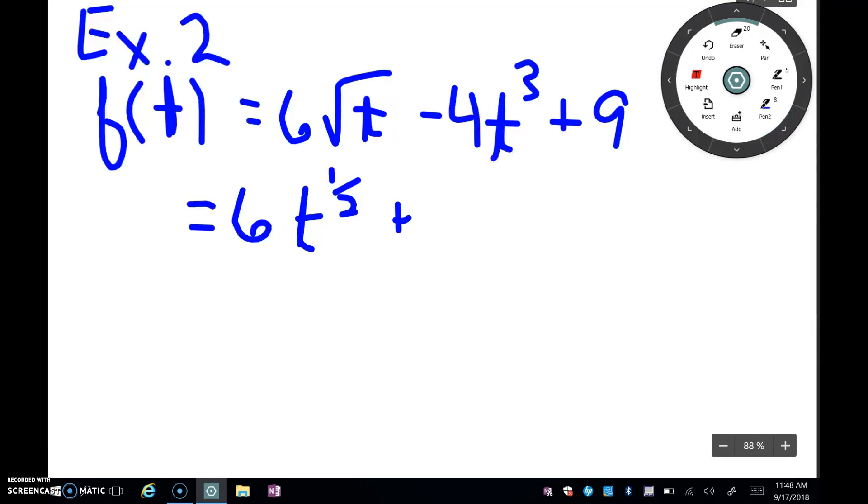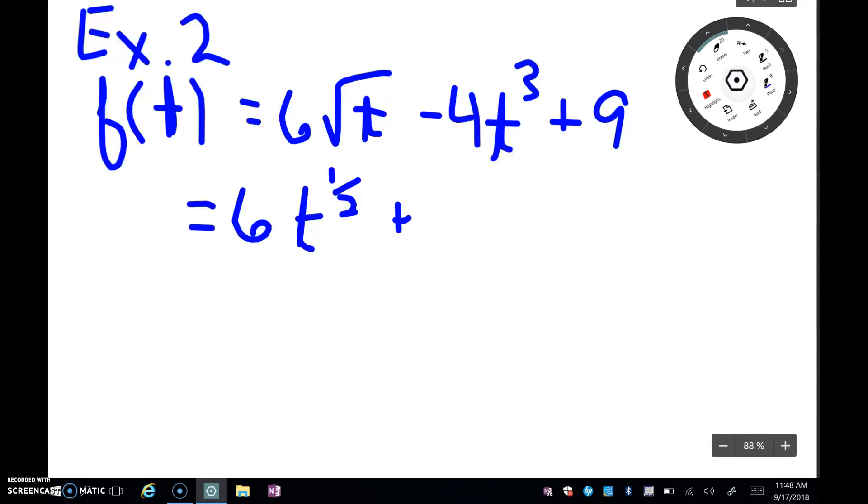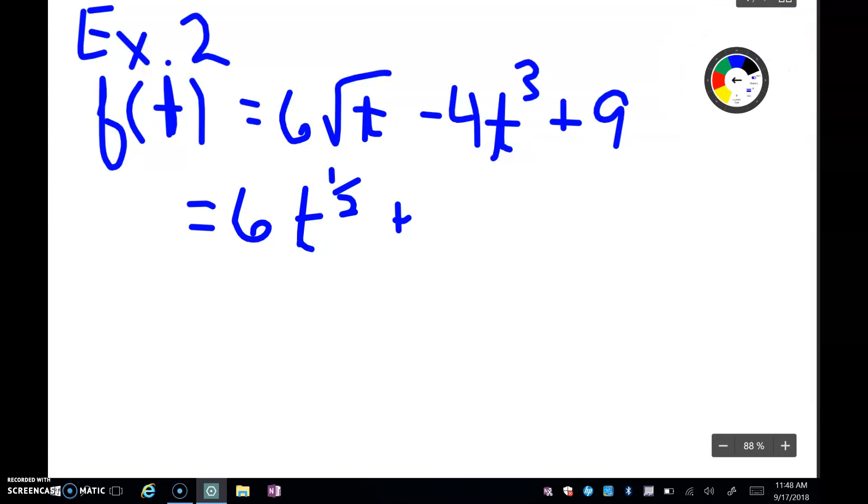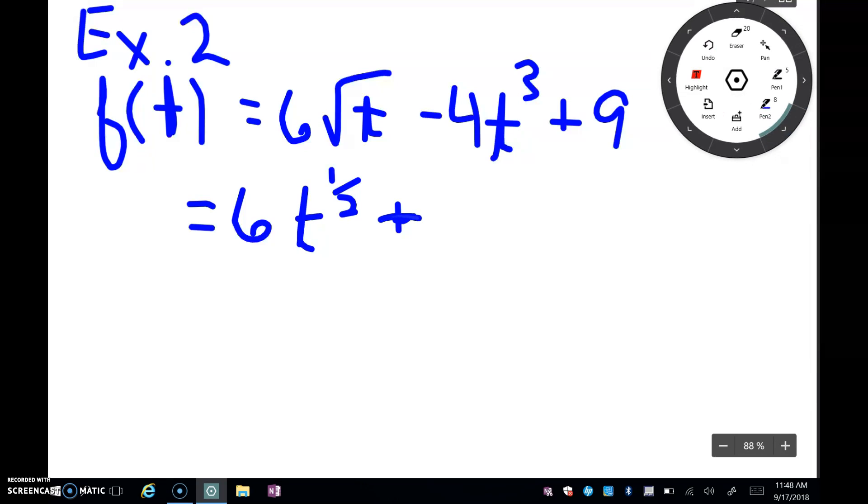I don't know why I can't get rid of that plus sign, but we'll remember that's a minus sign. That's minus, you guys. So this term and the next one are in the correct form. So I just need to rewrite the 6√t, 6 square root of t as 6t to the 1/2.